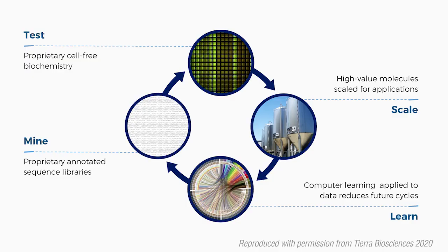Cell-free technologies are a pretty old technology — they've been around earlier than we can engineer cells. But there are really three applications where cell-free is currently useful. One is to make things. There are commercial companies and a lot of R&D labs that do this, but if you have proteins that are toxic or otherwise would be hard to make in cells, cell-free is a really good way to not only make the product that you could then use downstream, but also understand how to make the product. Making stuff has been a historical use.